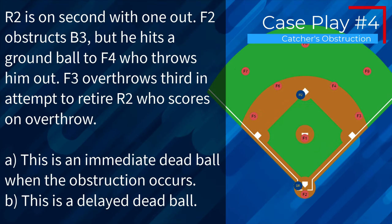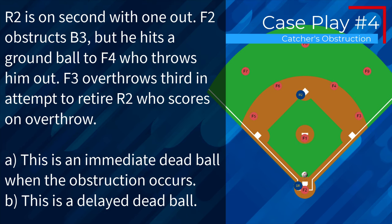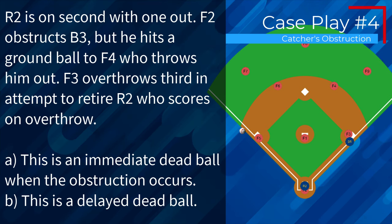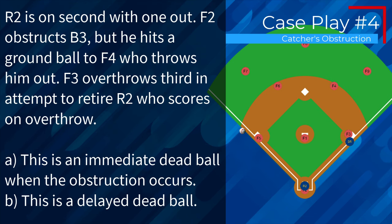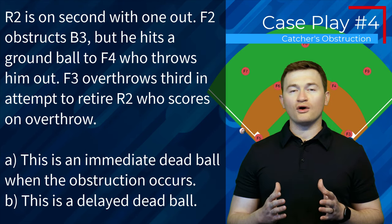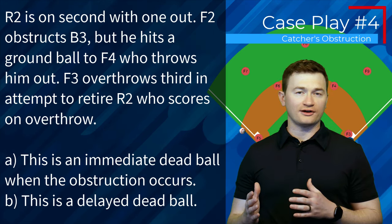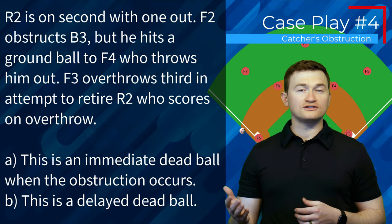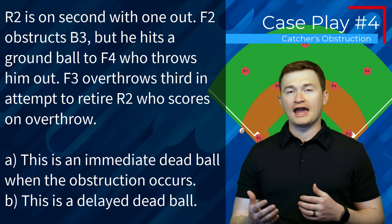Case play number four. R2 is on second with one out. F2 obstructs B3, but he hits a ground ball to F4 who throws him out. F3 overthrows third in an attempt to retire R2, who scores on the overthrow. Is this A, an immediate dead ball when the obstruction occurs, or B, a delayed dead ball? The correct answer is B — this is a delayed dead ball, and time will be called once all playing action occurs, so we can enforce the obstruction while still allowing the offensive coach to take the results of the play.